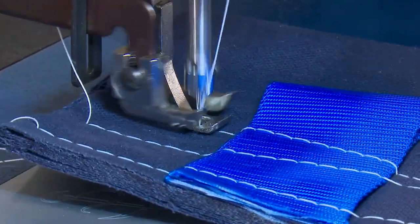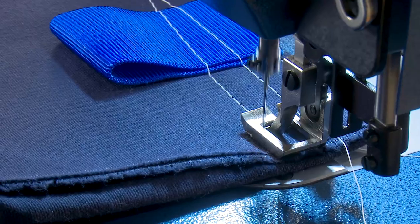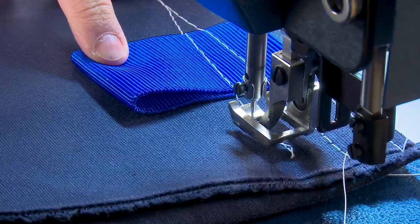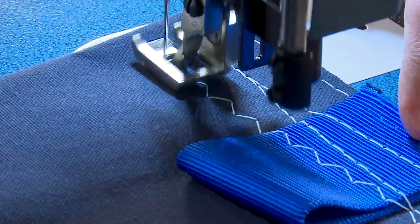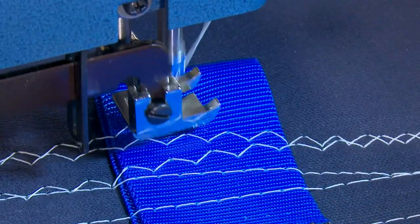The Ultrafeed LSZ1 is a powerful walking foot sewing machine that sews heavy fabric assemblies in both straight stitch and zigzag. Click the link at the top right to see a full sewing machine demo of the Ultrafeed LSZ1 model.